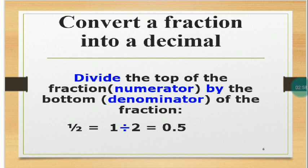Converting a fraction into a decimal, we have here divide the top of the fraction, which is the numerator, by the bottom or denominator. The fraction one-half is equal to one divided by two, which is equal to 0.5.